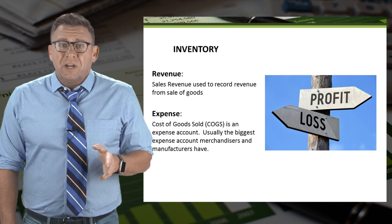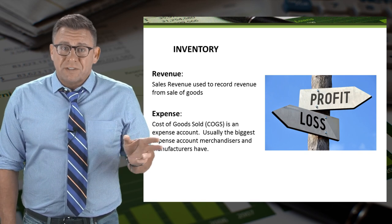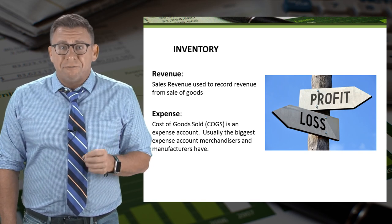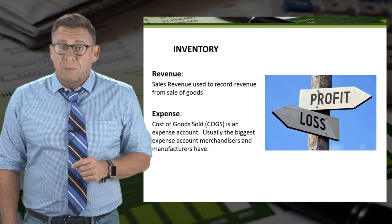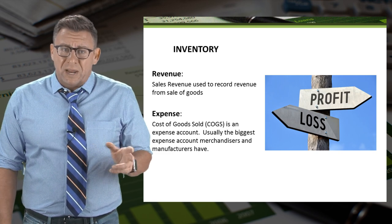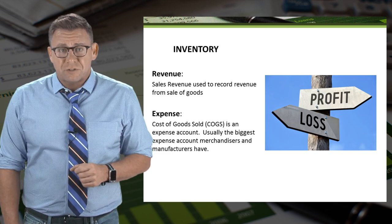As noted in the slide, cost of goods sold is often the single biggest expense incurred by merchandisers and many manufacturers.